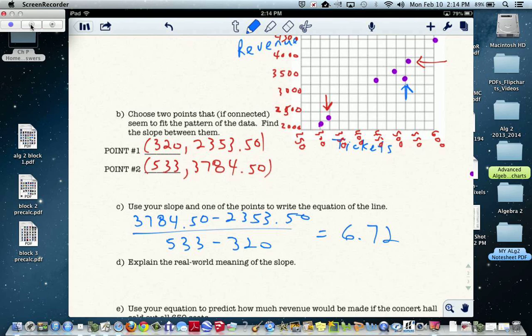it basically is, for every ticket I sell, I increase my revenue $6.72. Revenue increases.